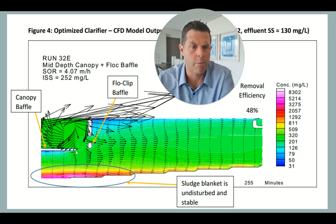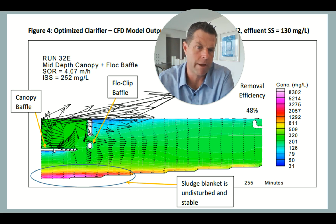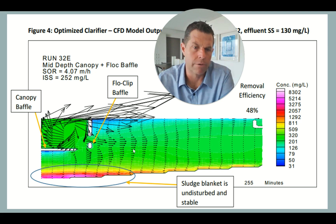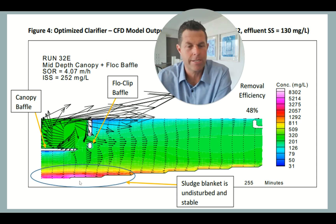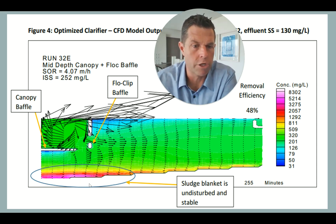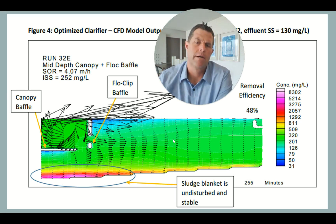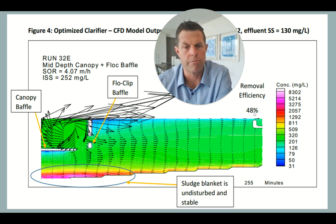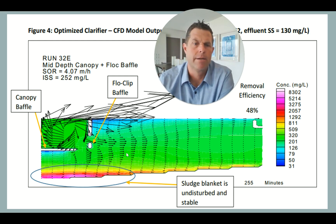We then modeled some improvements. There's a system that we design and sell called a canopy baffle — we place that here — as well as a flocculation baffle, which helps improve internal flocculation as flow enters the clarifier. We also provide a really good lateral distribution out of the tank. With our x-ray vision, we can see that the sludge blanket is no longer sheared, and we have very high performance even up at 2,400 gallons per day per square foot — still up at 48% solids removal. We improved from 23% to 48% through these improvements.